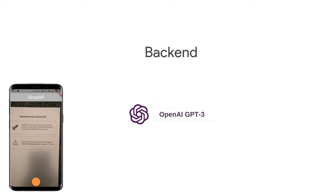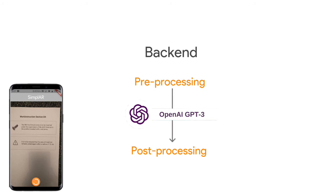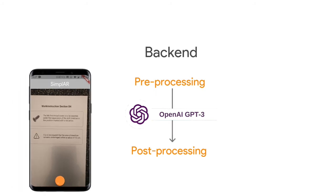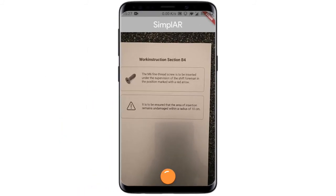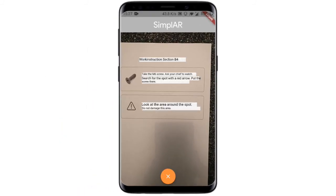The backend uses a mix of GPT-3 and our own machine learning models to process the text into a simpler version. The simplified text is returned to the client, which then shows it as an AR overlay.